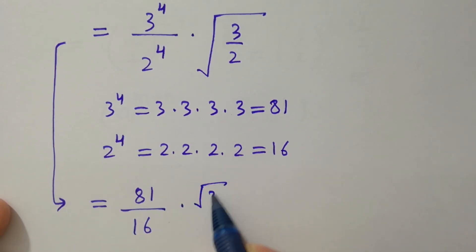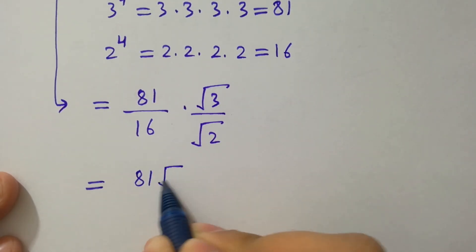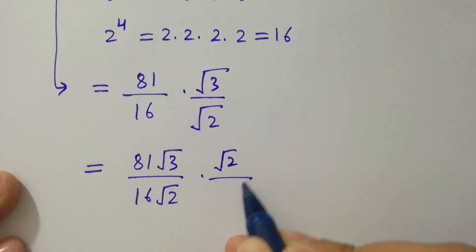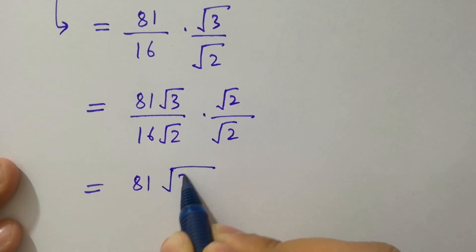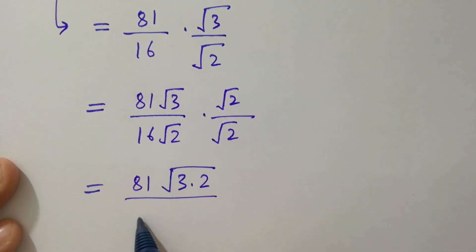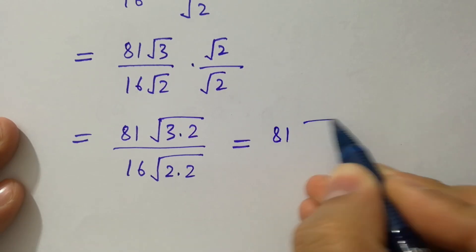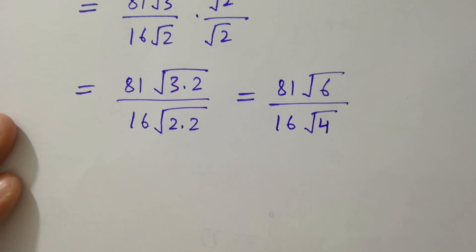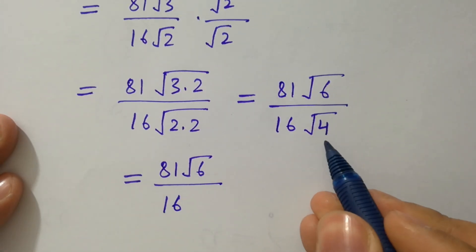Times square root of 3 over square root of 2, which we rationalize as square root of 3 over square root of 2 times square root of 2 over square root of 2. So we have 81 times square root of 3 times square root of 2 over 16 times square root of 2 times square root of 2. That gives us 81 times square root of 6 over 16, and square root of 4 is 2, so the denominator becomes 16 times 2.